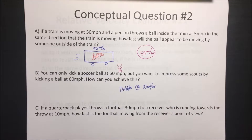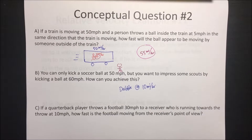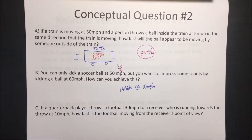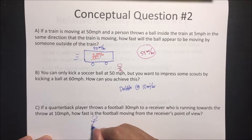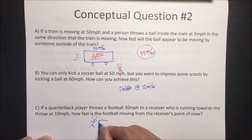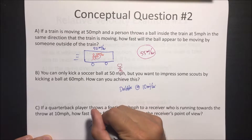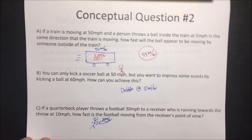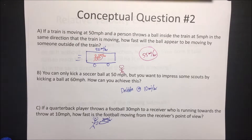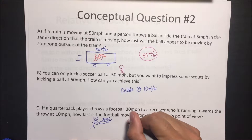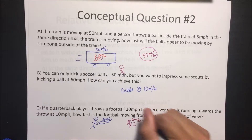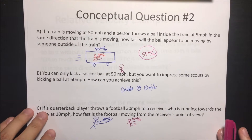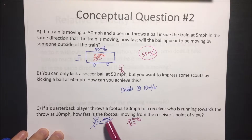Last question: if a quarterback throws a football at 30 miles an hour to a receiver who is running towards the throw at 10 miles an hour, how fast is the football moving from the receiver's point of view? Let's draw this out. We have this person who throws the football at 30 miles an hour, and this receiver is running towards the person at 10 miles an hour. We want to know from this receiver's point of view how fast this football looks.